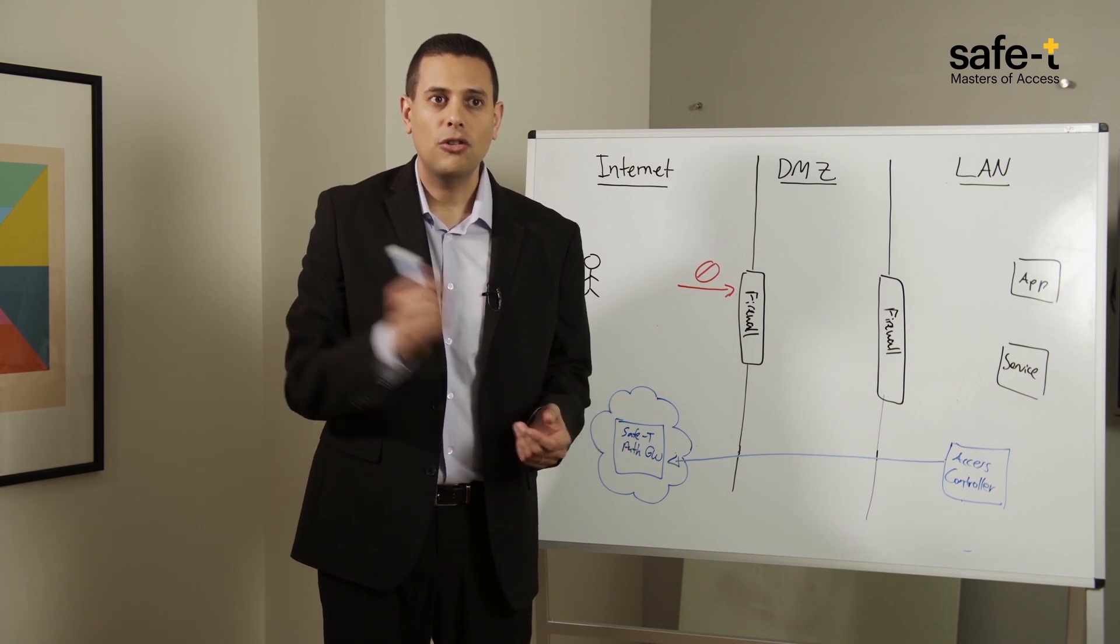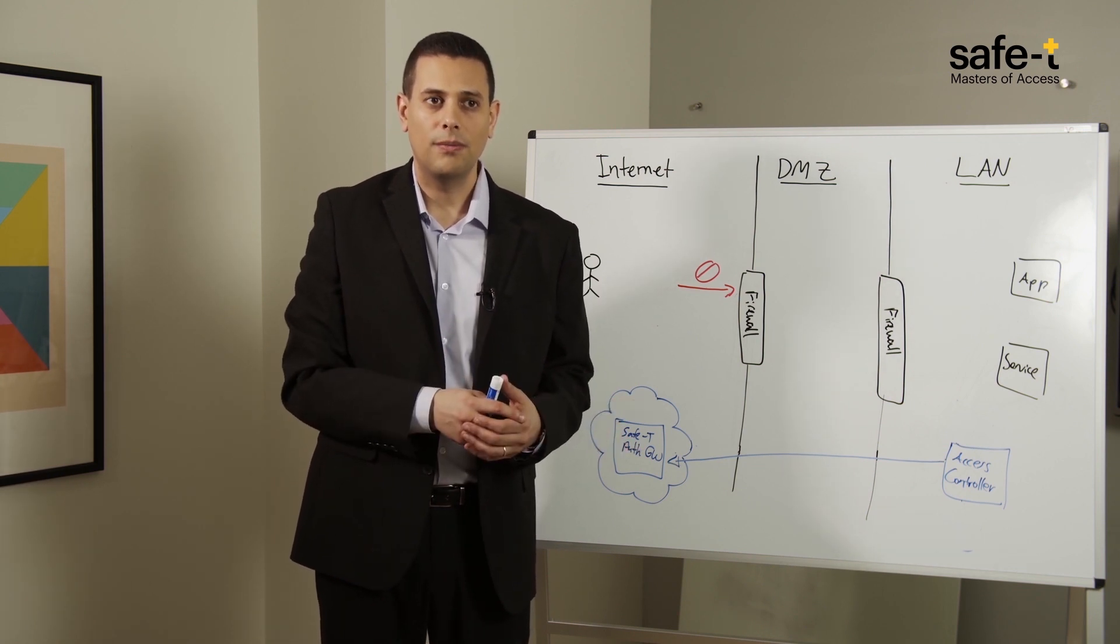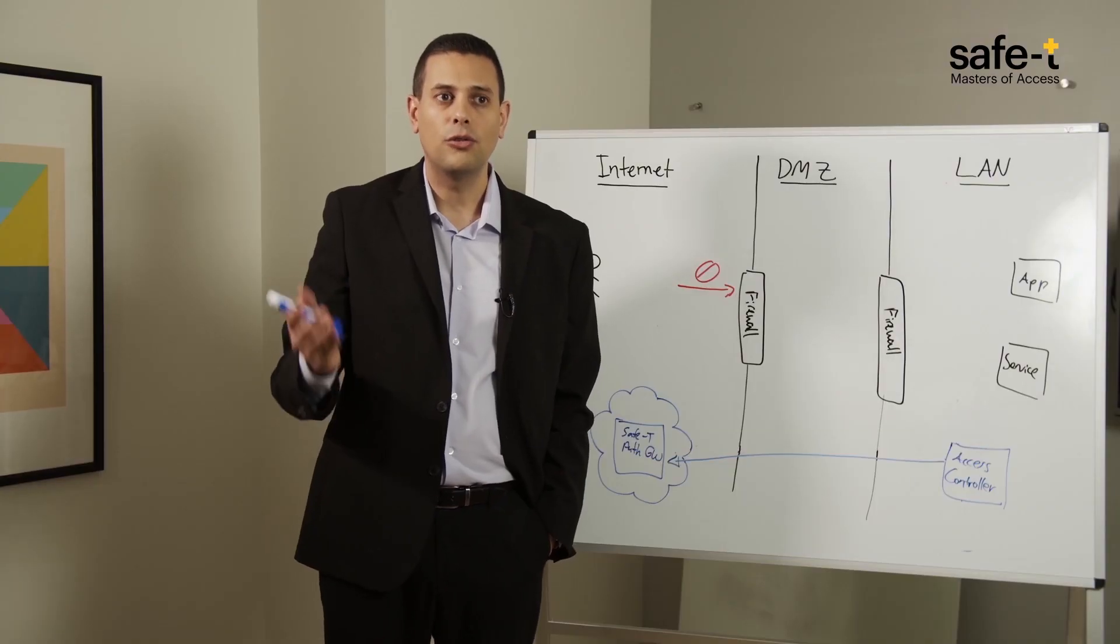At that point, Access Controller knows four things about the user. Number one is the who: who the user is. Number two is the what: what application, service, or resource out of those authorized the user wishes to access.